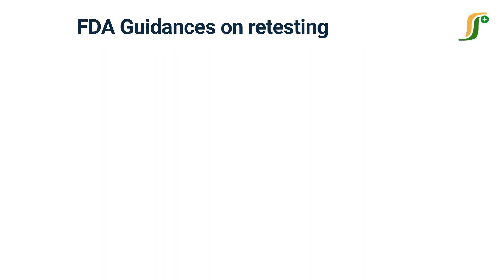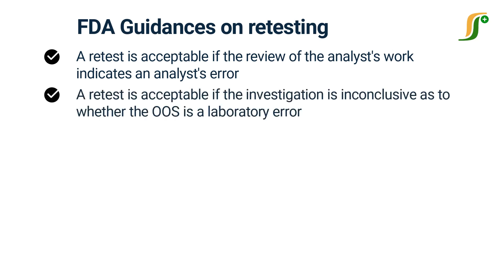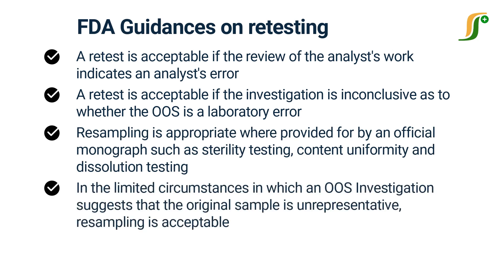Here are some FDA guidances on retesting as a result of out-of-specification investigation. A retest is acceptable if the review of the analyst's work indicates an analyst's error — in this case, limited retesting is required and the original result may be replaced by the retest result. A retest is also acceptable if the investigation is inconclusive as to whether the OOS is a laboratory error and the laboratory needs to determine whether the OOS result is an outlier or a reason to reject the batch. Resampling is appropriate where provided for by an official monograph such as sterility testing, content uniformity, and dissolution testing. In the limited circumstances in which an OOS investigation suggests that the original sample is unrepresentative, resampling is acceptable.